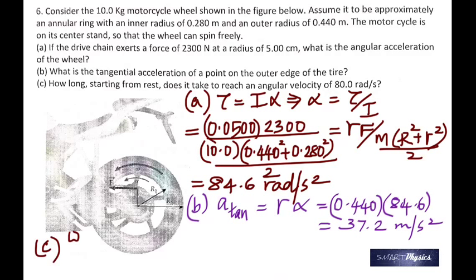And then, how long does it take, starting from rest? So the initial angular velocity is zero because it says rest, and the final is 80, and you are asked to find the time. That's easy because you already know alpha.